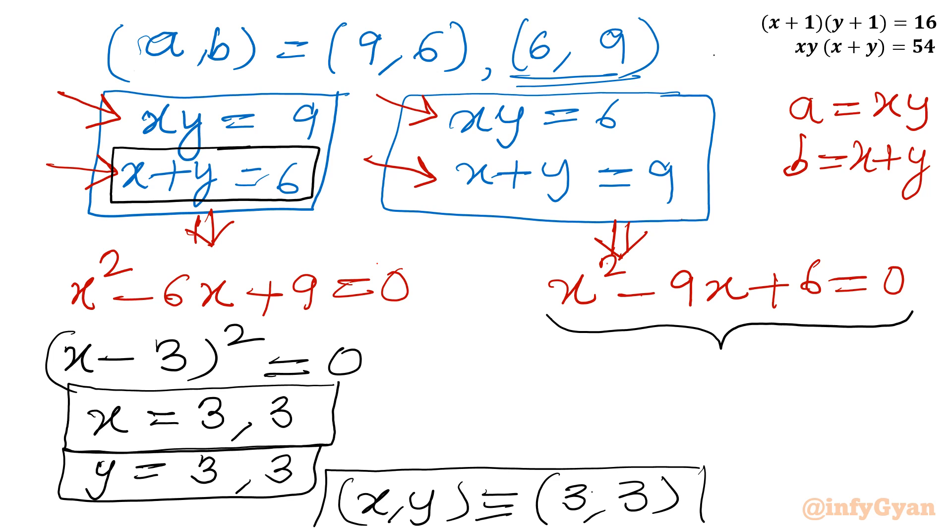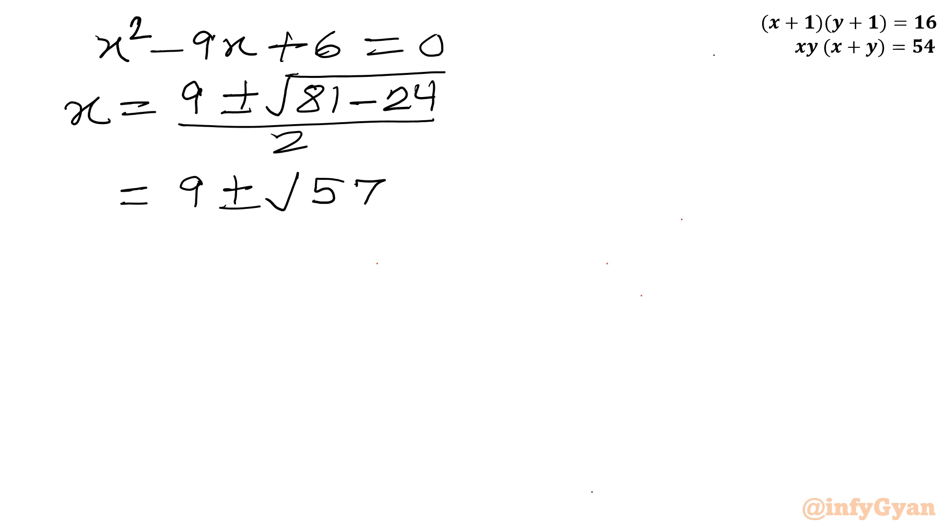Let us apply quadratic formula. x is equal to minus of minus 9, so 9 plus or minus under the root 81 minus 4ac, which is minus 24, divided by 2. So 9 plus or minus square root of 57 over 2.